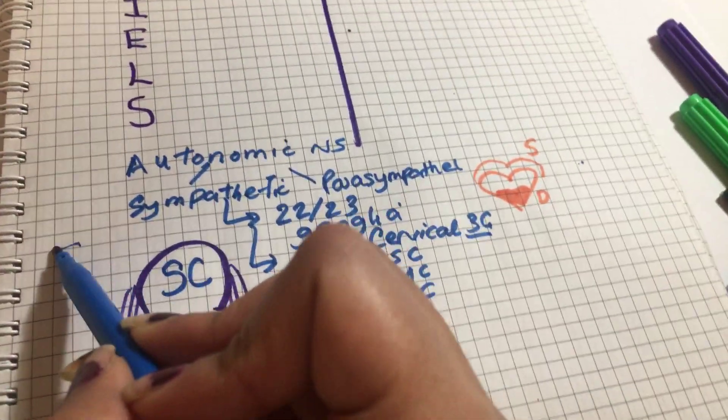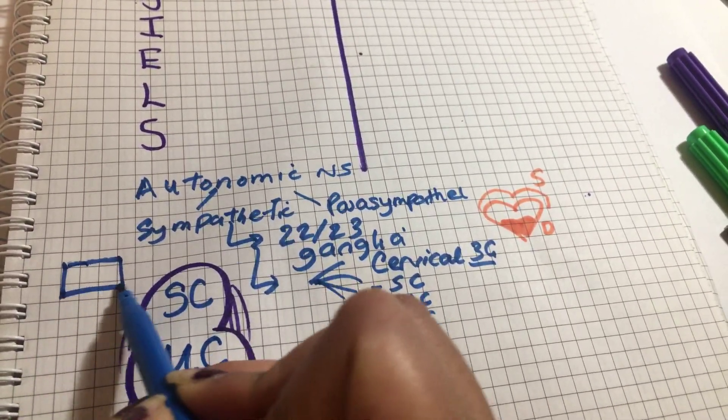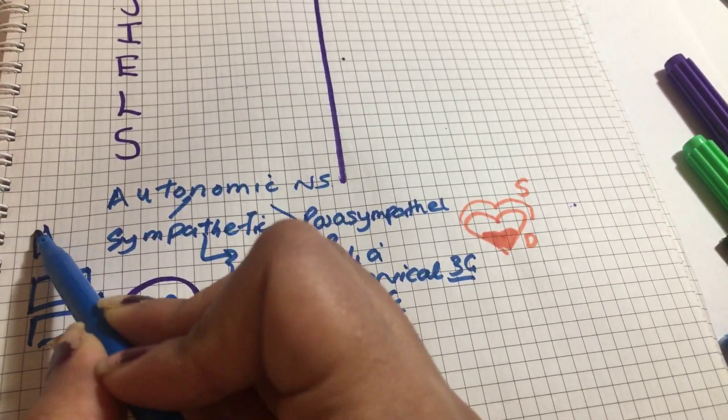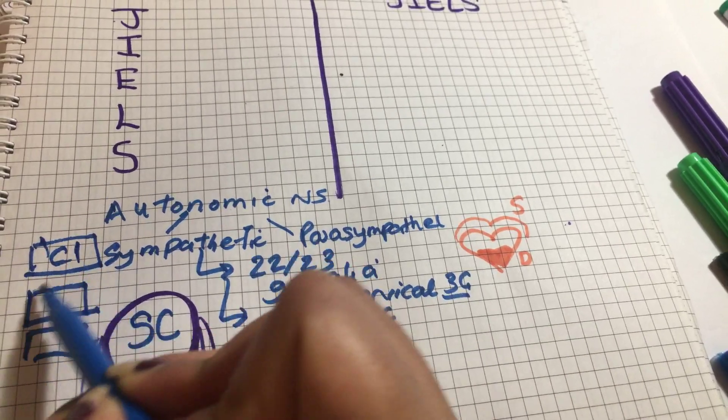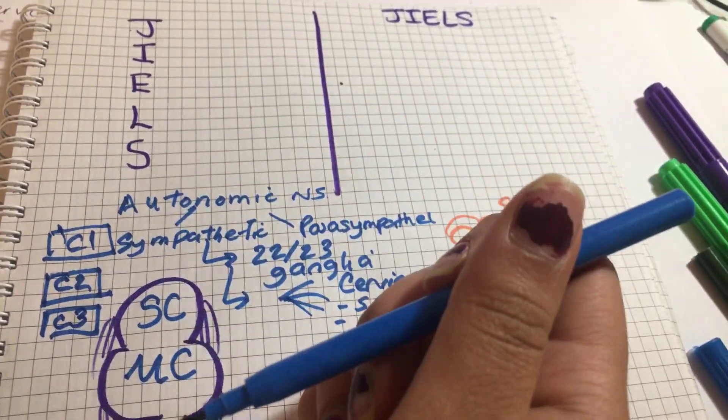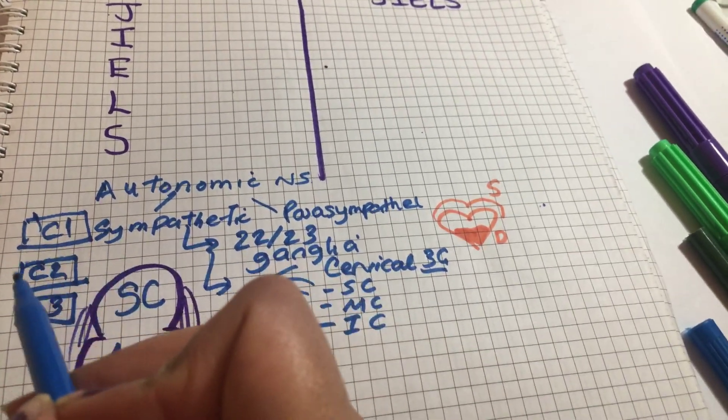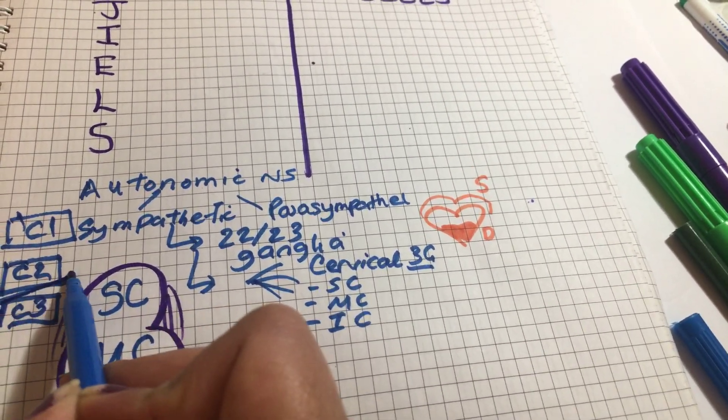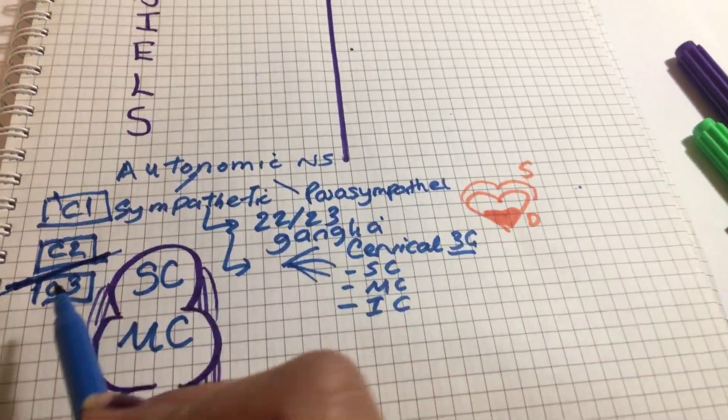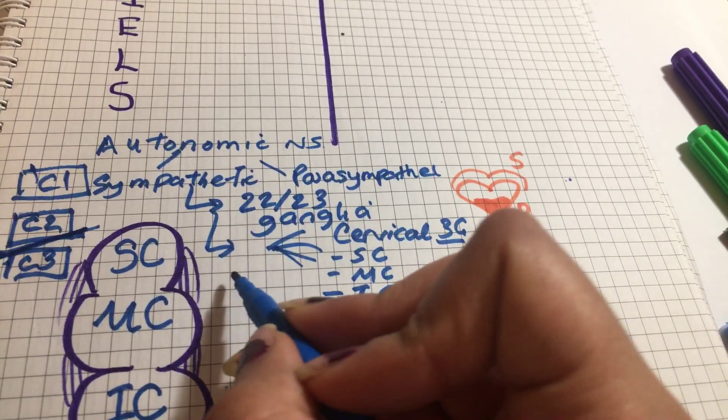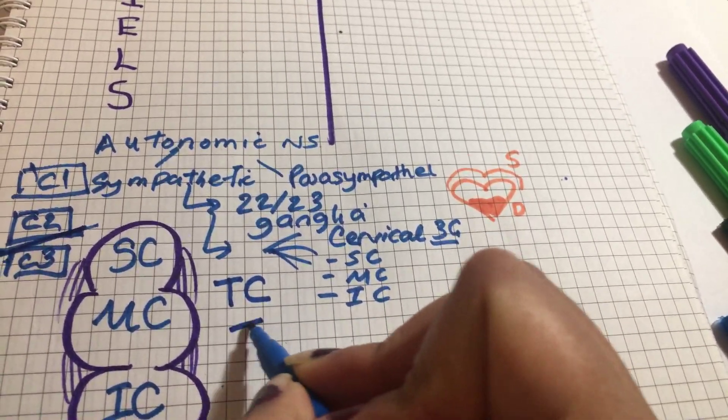The superior cervical ganglion is located between bodies of C2 and C3. The middle cervical is located between TC and TS.